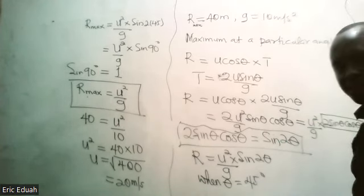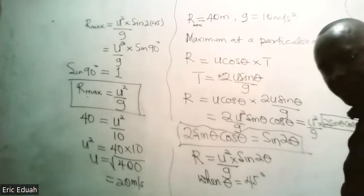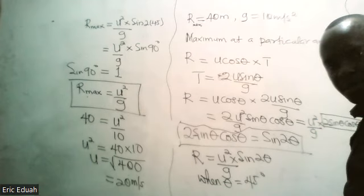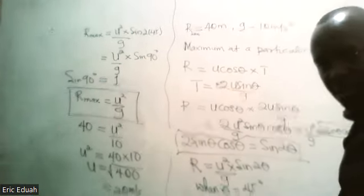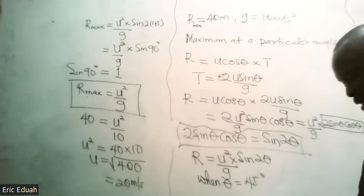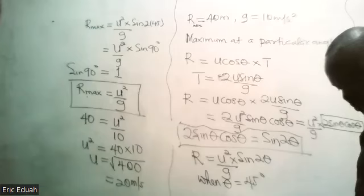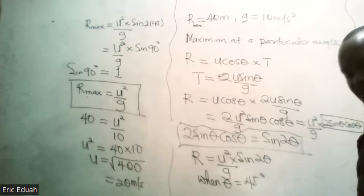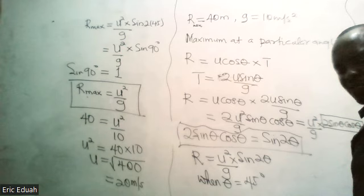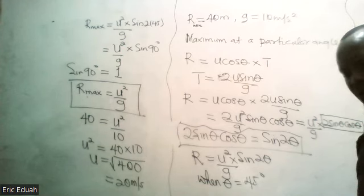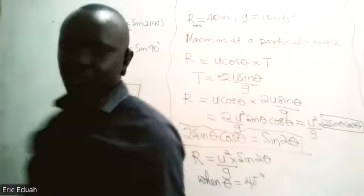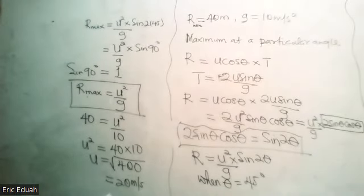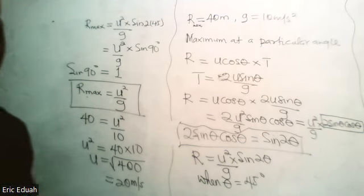If you have any questions, please bring them up before we continue. Okay, let's move on. Give one reason why the value of the acceleration of free fall g varies slightly from the surface of the Earth.